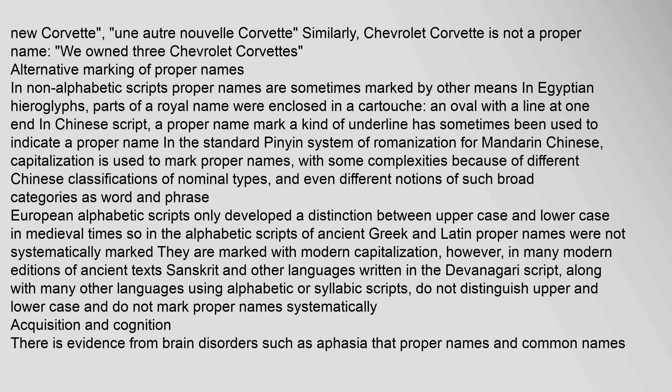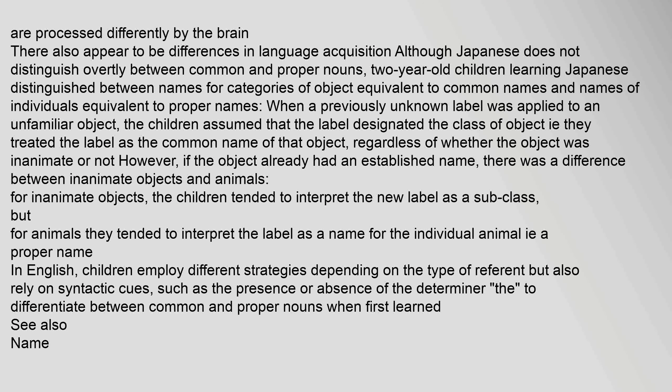There is evidence from brain disorders such as aphasia that proper names and common names are processed differently by the brain. There also appear to be differences in language acquisition. Although Japanese does not distinguish overtly between common and proper nouns, two-year-old children learning Japanese distinguished between names for categories of object equivalent to common names and names of individuals equivalent to proper names. When a previously unknown label was applied to an unfamiliar object, the children assumed the label designated the class of object. However, if the object already had an established name, there was a difference: for inanimate objects, children tended to interpret the new label as a subclass, but for animals they tended to interpret it as a name for the individual animal — i.e. a proper name. In English, children employ different strategies depending on the type of referent but also rely on syntactic cues such as the presence or absence of the determiner the to differentiate between common and proper nouns.